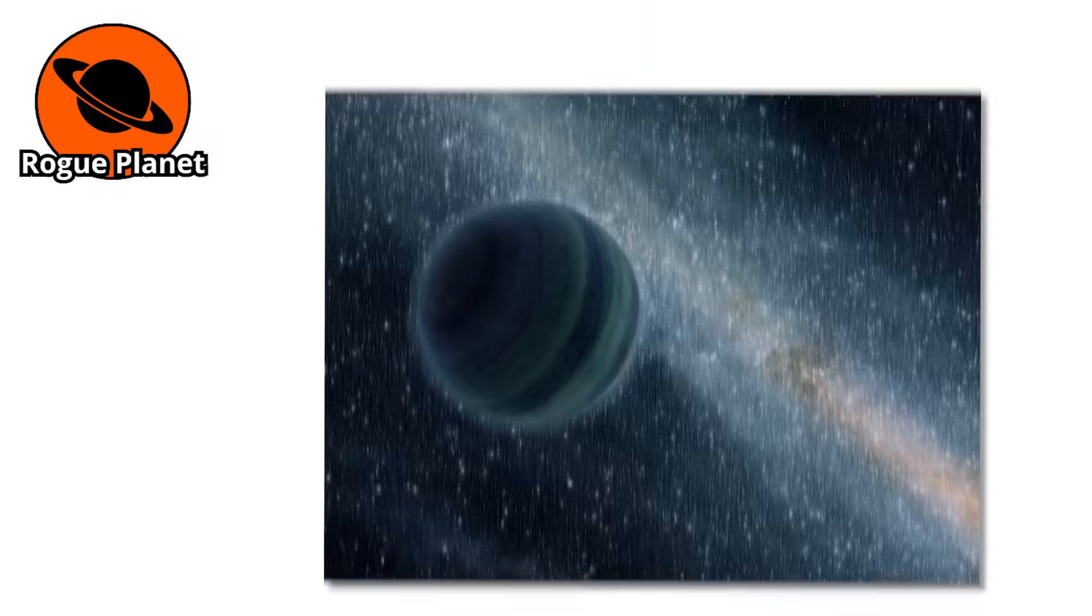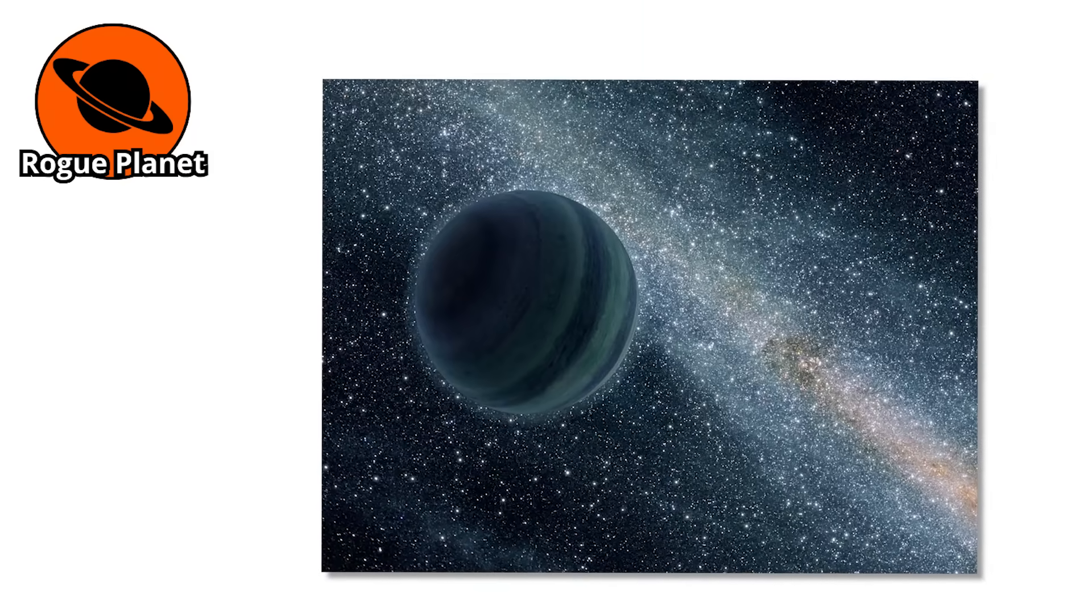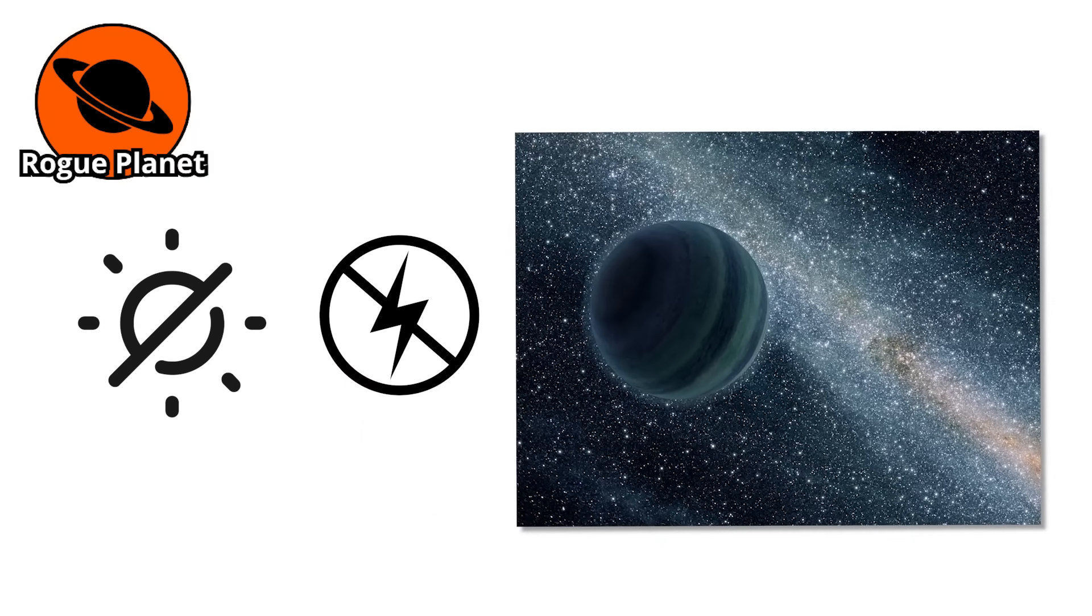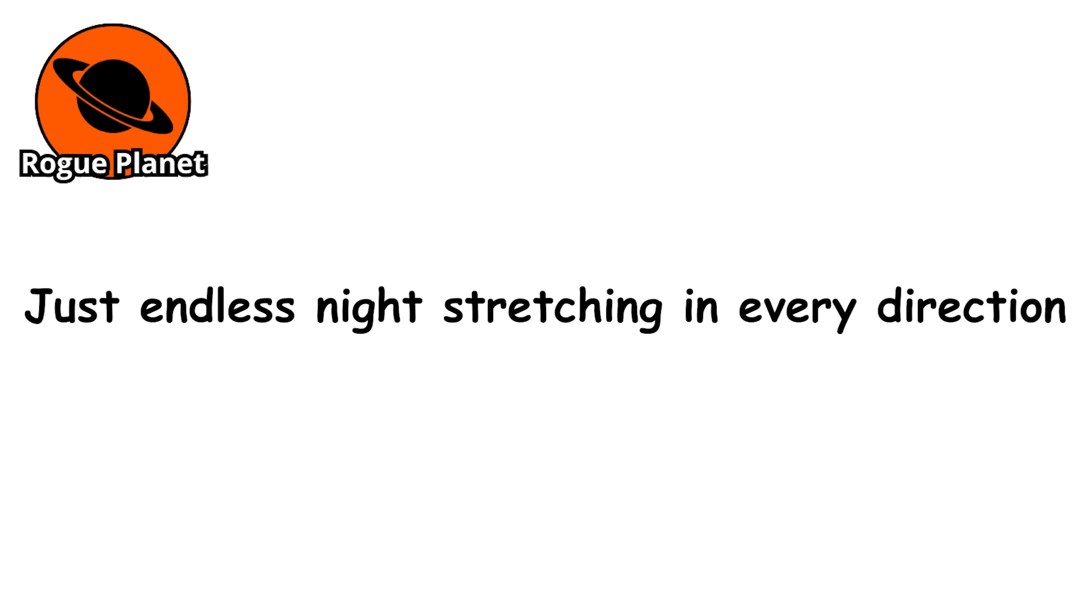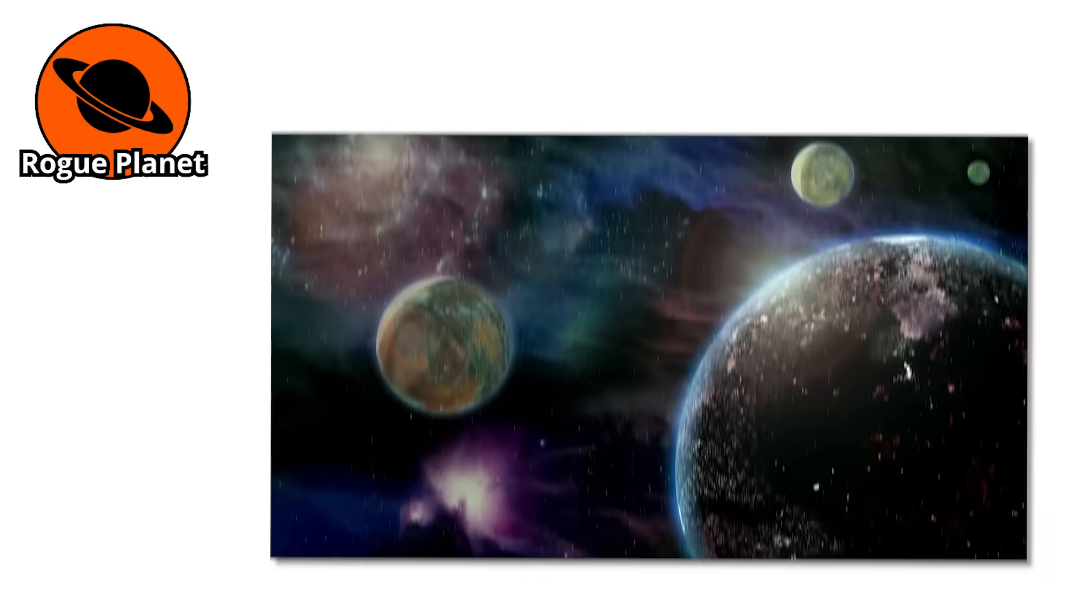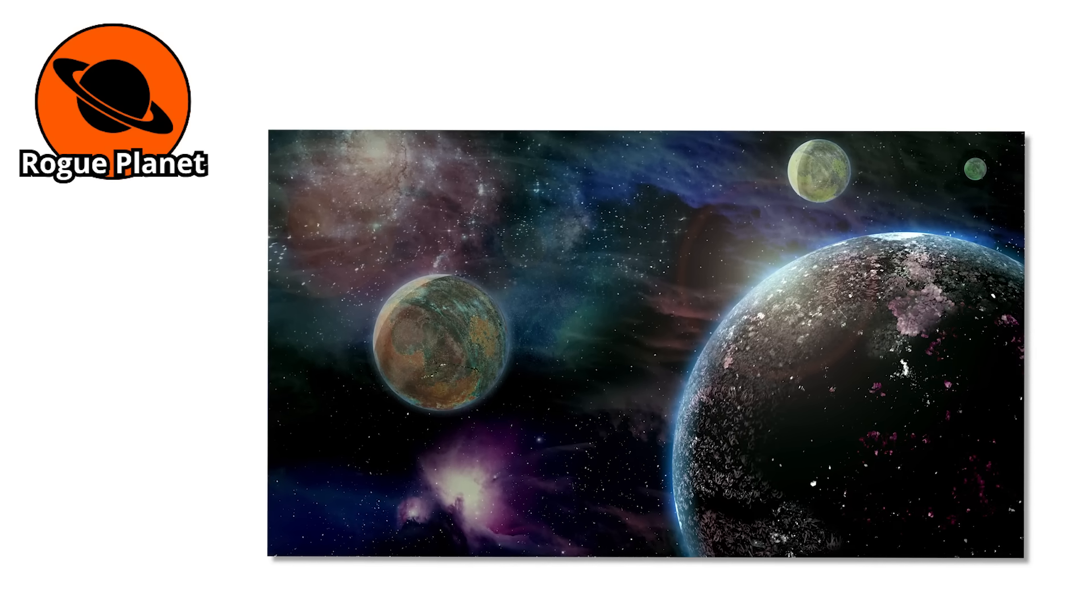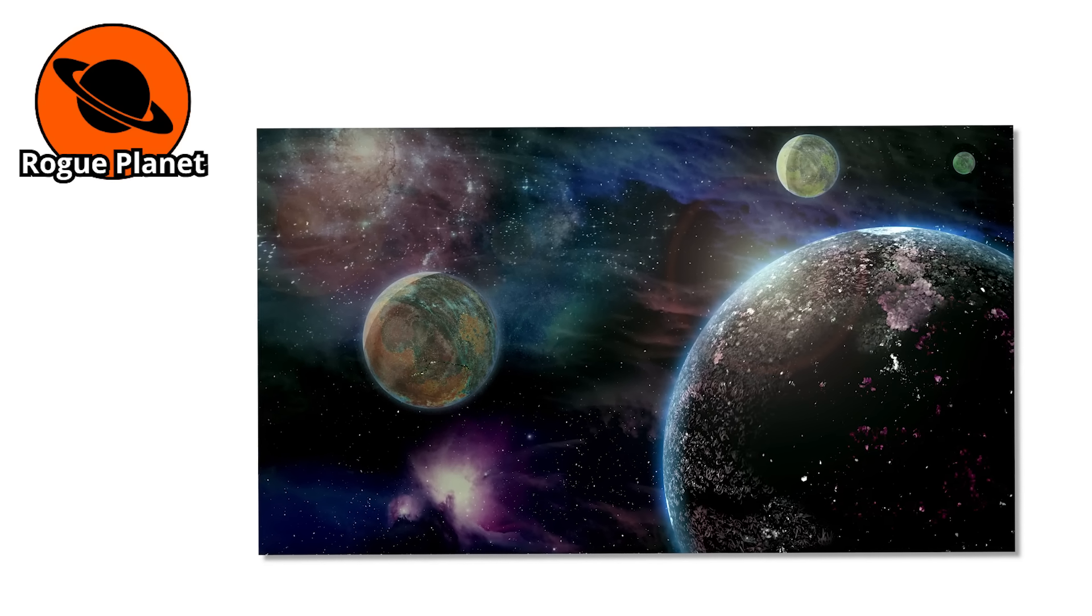Number 3. Now imagine a planet drifting alone through the universe. No sun, no light, no warmth, just endless night stretching in every direction. This is a rogue planet and it is one of the loneliest and most unsettling places imaginable.